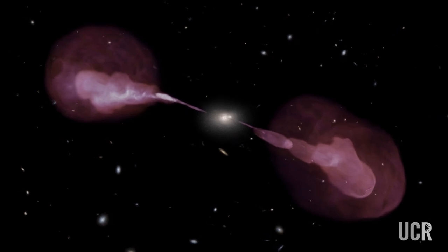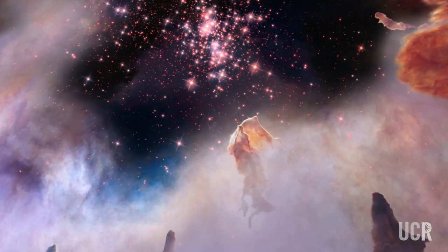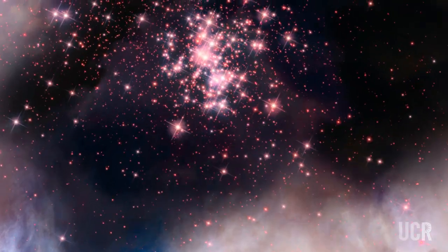We see these galaxies forming stars very early. They are forming many stars, and then suddenly they stop forming stars. But we don't know how this happens exactly.